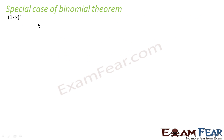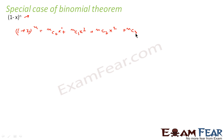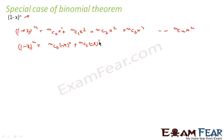Similarly, we have one more special case, and that is (1 - x) to the power n. Here instead of x we have minus x. In the formula for (1 + x)^n = nc0 + nc1·x + nc2·x^2 + nc3·x^3 + ... + ncn·x^n, we replace x with minus x. This gives nc0 + nc1·(−x) + nc2·(−x)^2 + nc3·(−x)^3 + ... + ncn·(−x)^n.